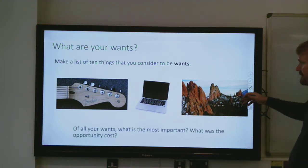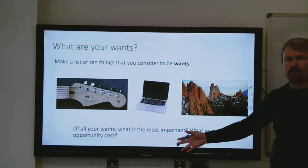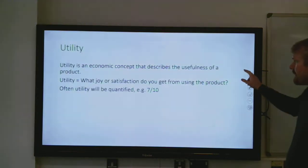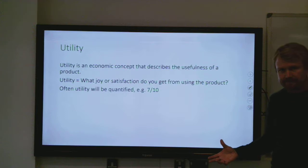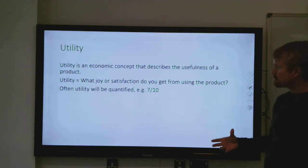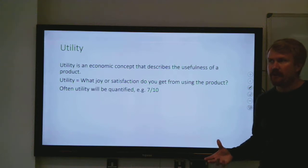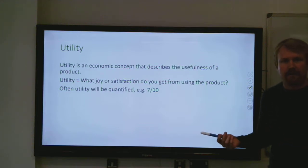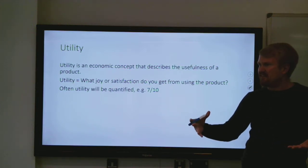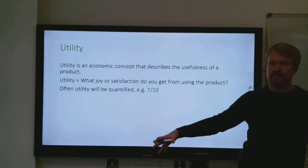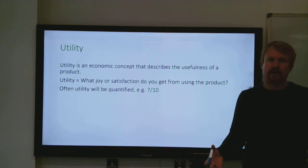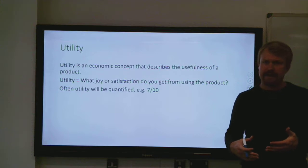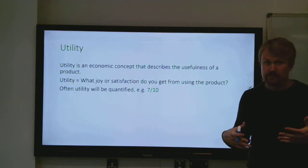I've got this problem because I've got all these wants, and you can think about which is the most important, which have the highest opportunity cost. You can also think about it in terms of utility. Utility is this economic concept that describes the usefulness of a product. For example, getting a brand new guitar might give me utility of seven out of ten, but going on holiday would give me maybe eight out of ten. Utility just describes that general idea of usefulness — how useful is something to you.